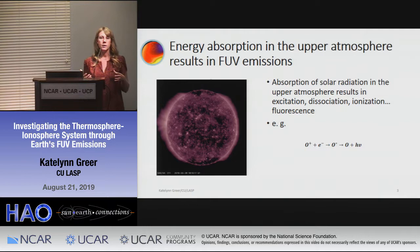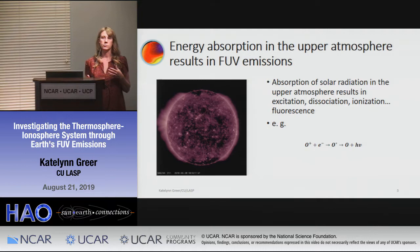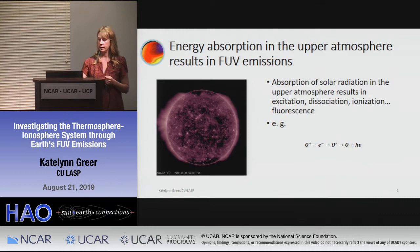Energy is absorbed in the upper atmosphere — mostly extreme ultraviolet radiation — which causes excitation, dissociation, ionization, fluorescence, and different photochemical reactions. One that's particularly useful for us as scientists is where you have an O-ion and an electron that go into an excited state, then relax and emit a photon.